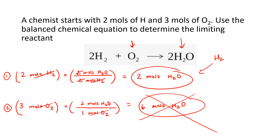H₂ is the limiting reactant. Notice — we started with two moles of H₂ and three moles of O₂, and it's tempting to just look at the lower number. But that doesn't always work. Sometimes the larger amount is actually the limiting reactant. You have to use those mole ratios first — you can't just look at the numbers and say the lowest one is limiting.